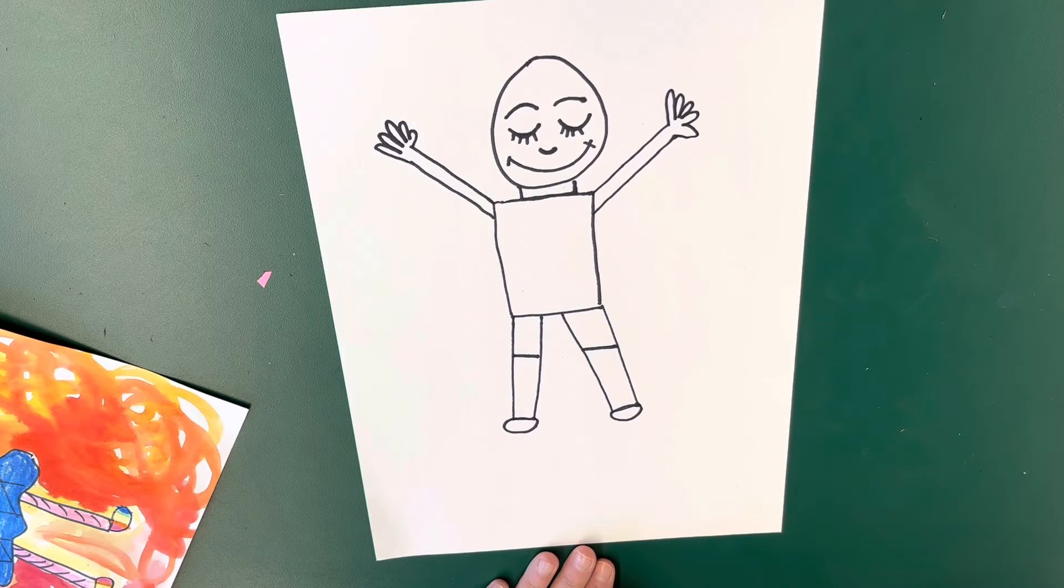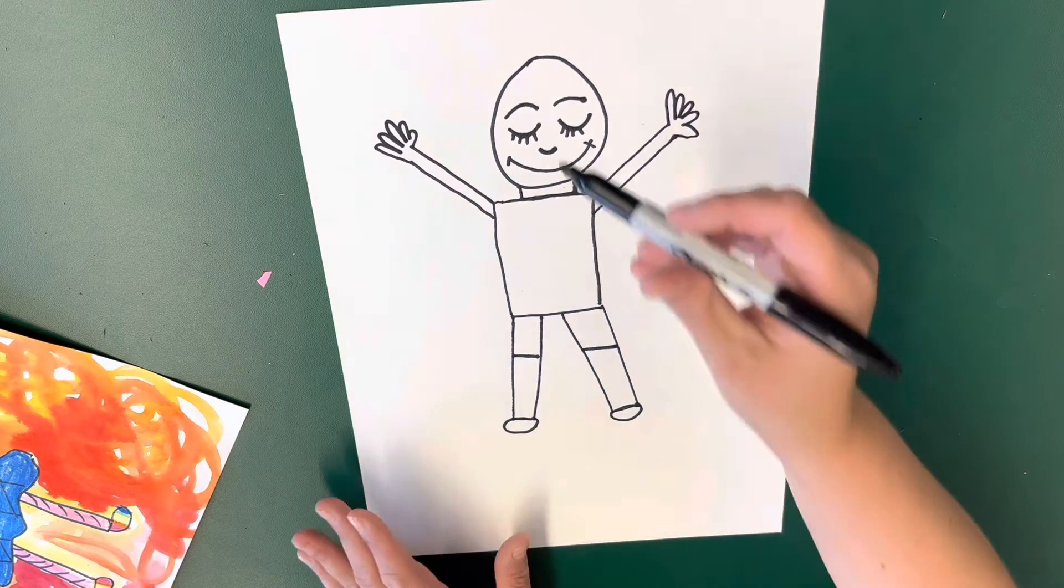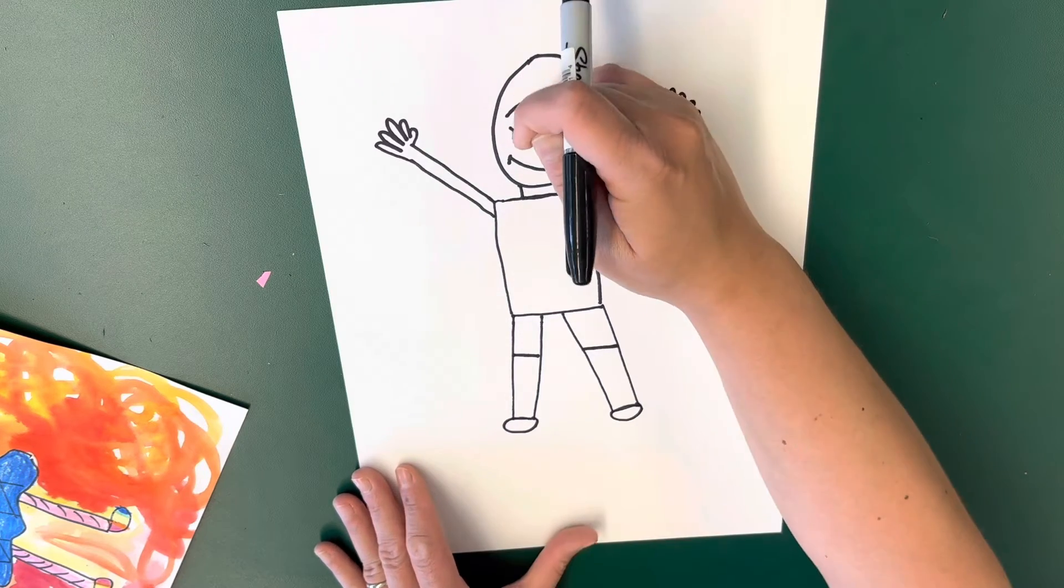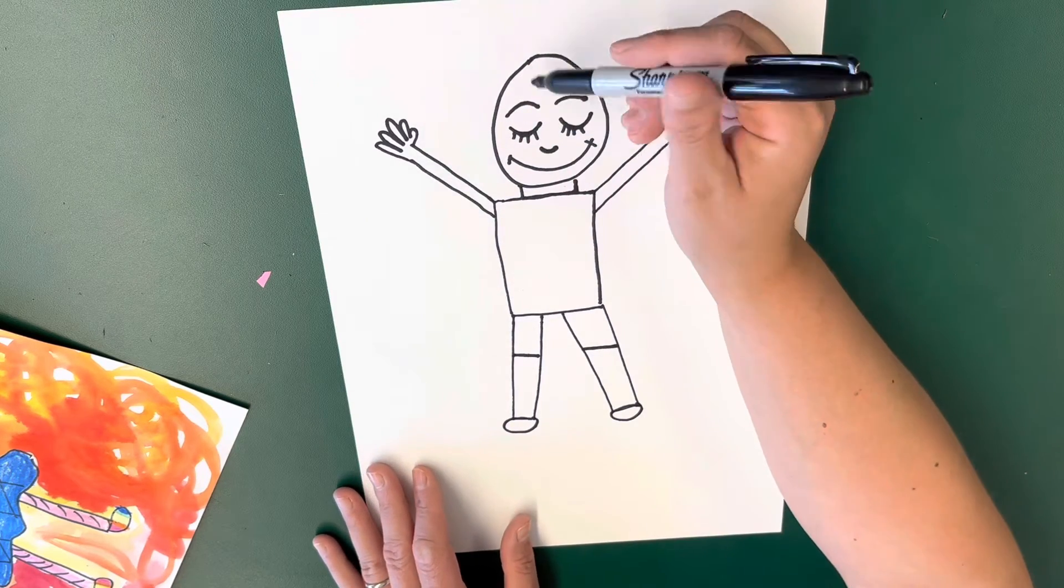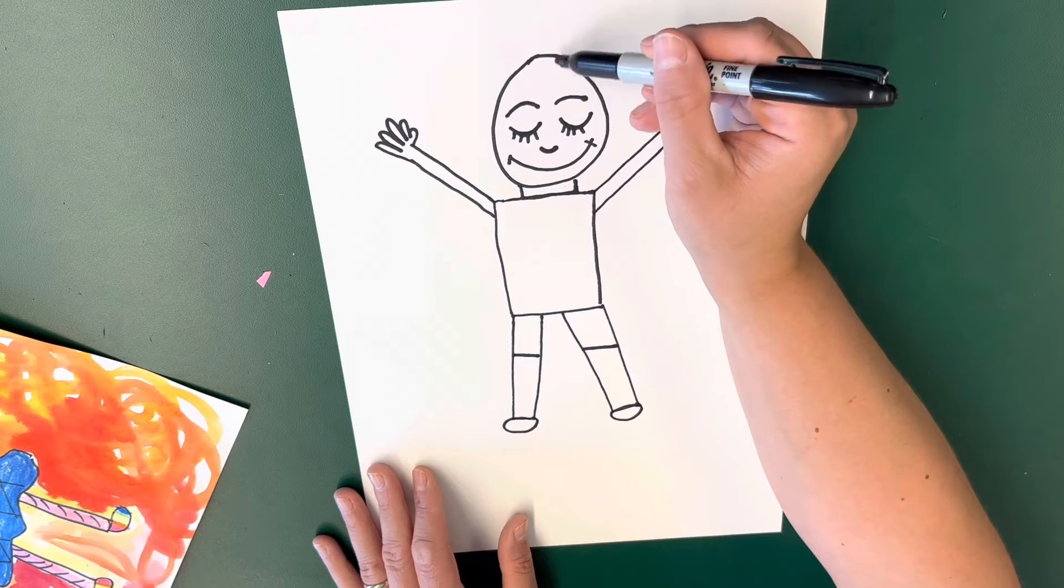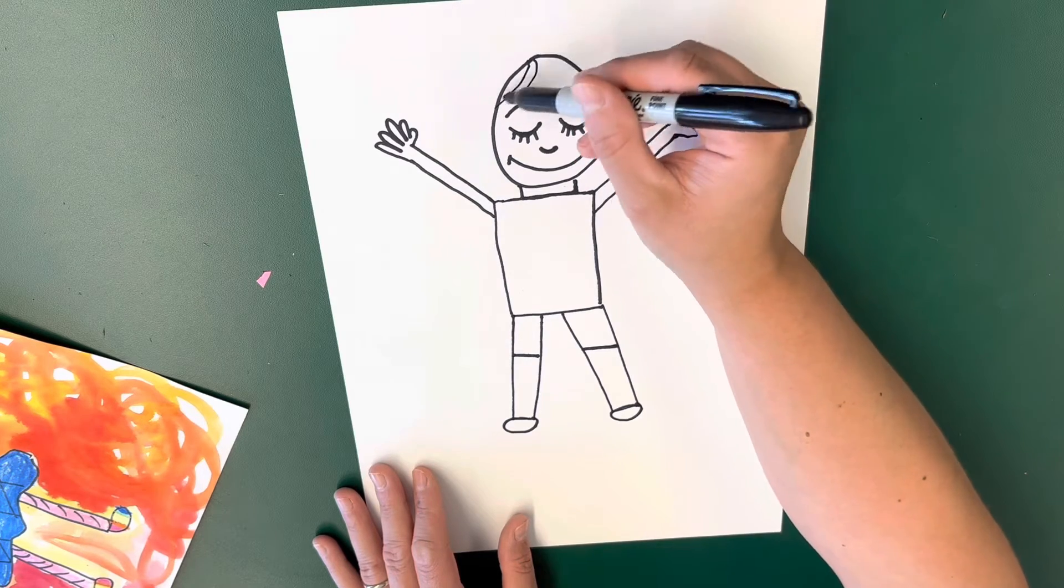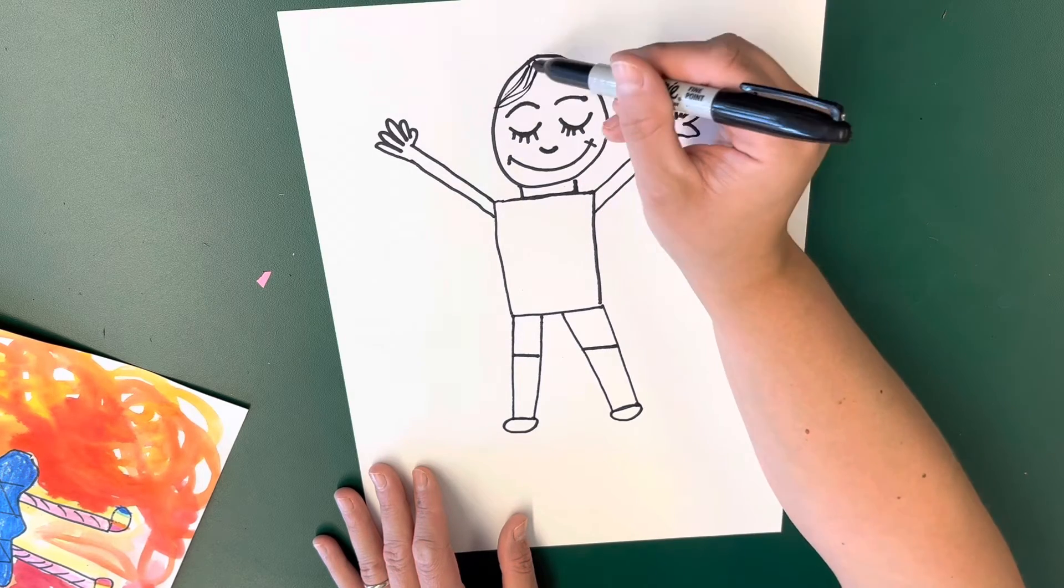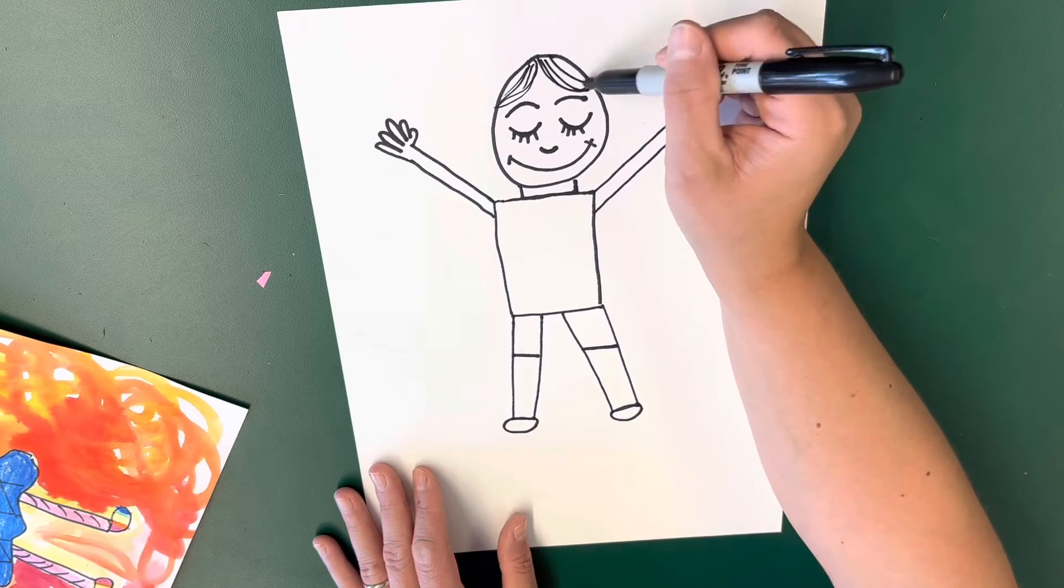All right friends, so now you're going to add your hair. Now our hair always falls a little bit down into our head. If you have bangs you're going to draw straight up and down lines, but if you're like me and you just have a part, you're just going to do some curves that come from the top and come inwards.